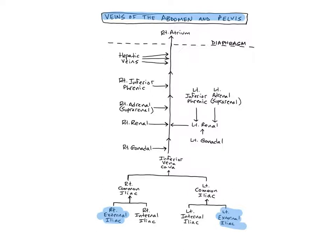The right and left internal iliac veins begin near the superior portion of the greater sciatic notch of the pelvic bone, and run medially to empty into the common iliac veins. They drain the muscles of the pelvic wall and gluteal region, pelvic viscera, and the external genitals.